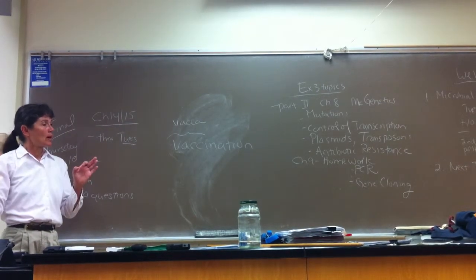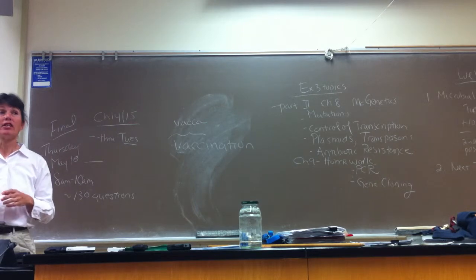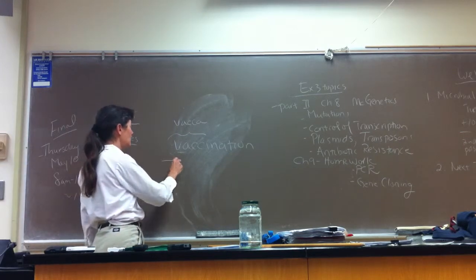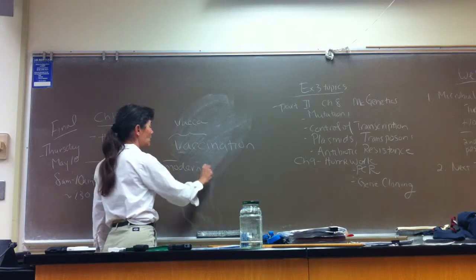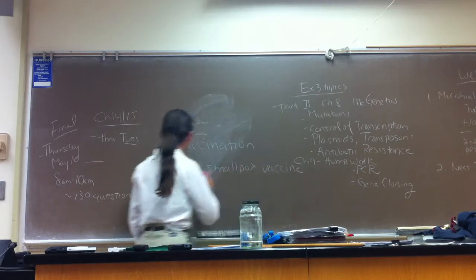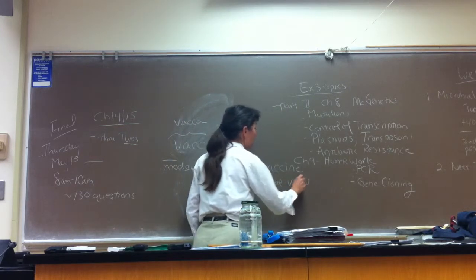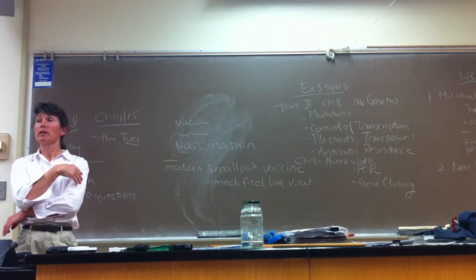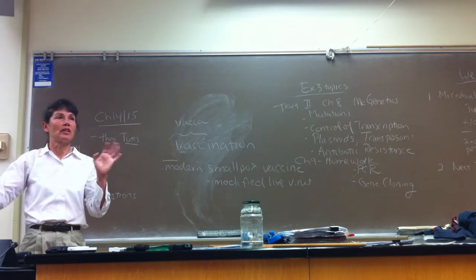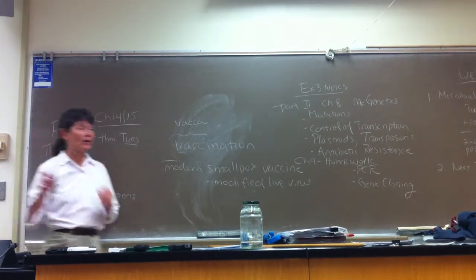The smallpox disease in the wild was eradicated by a vaccination campaign by the World Health Organization in the late 1960s. During their vaccination campaign, the so-called modern smallpox vaccine was a modified live virus, meaning it actually invaded human cells and replicated, causing fluid-filled vesicles full of the vaccine virus. Officially the smallpox vaccine virus is not cowpox virus — it's called the vaccinia virus.